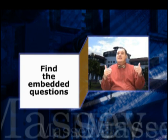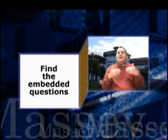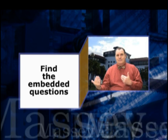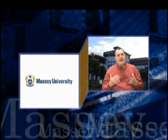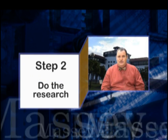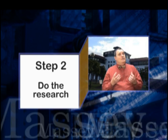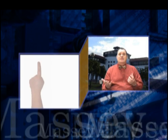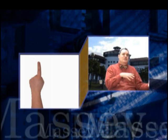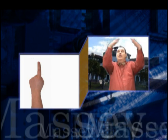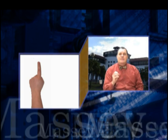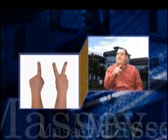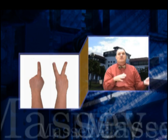The first thing is to find all the questions embedded in the assignment question — these will guide you through answering it. Now that we've analyzed the question, it's time to do the research. There are basically two types of research. First-hand research, where you go out, talk to people, conduct surveys, make observations, and gather information in the real world. The second kind is second-hand research, where you go to the library and look at course materials, books, journal articles, and even the internet.